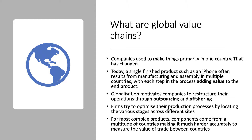Globalization is key to understanding this because many companies have restructured their supply and production through outsourcing and offshoring. Firms now have the capability to optimize production by locating across various production stages from country to country. For very complex products, components come from a wide range of countries and continents.